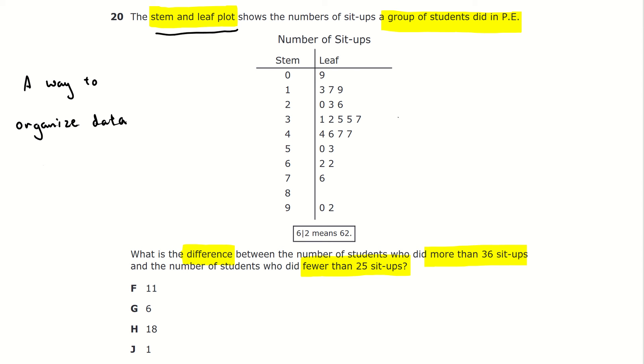The number of students who did more than 36 sit-ups, this is a symbol to represent greater than, by the way, and the number of students who did fewer than 25 sit-ups, that's a symbol to represent less than.